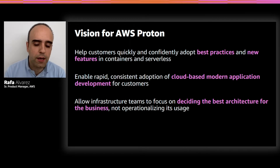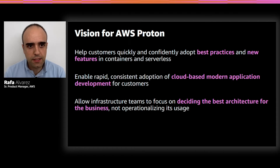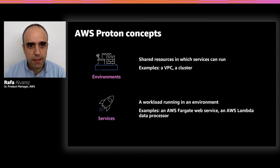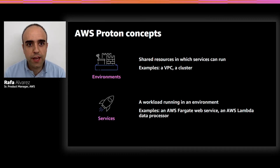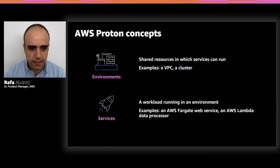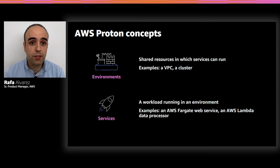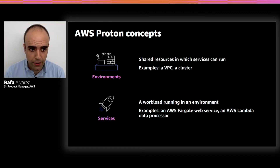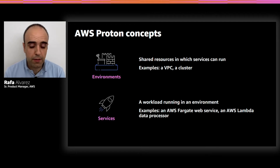Let's talk about the key resources this service makes available. There are two core concepts in AWS Proton: environments and services. An environment in Proton represents the shared resources that several of your services are going to be running on — a VPC, a cluster, a shared load balancer are typical examples. Services on the other side represent an individual workload, one of those microservices, and they run on one or more environments. A Fargate web service or a data processing service in Lambda are examples of this.